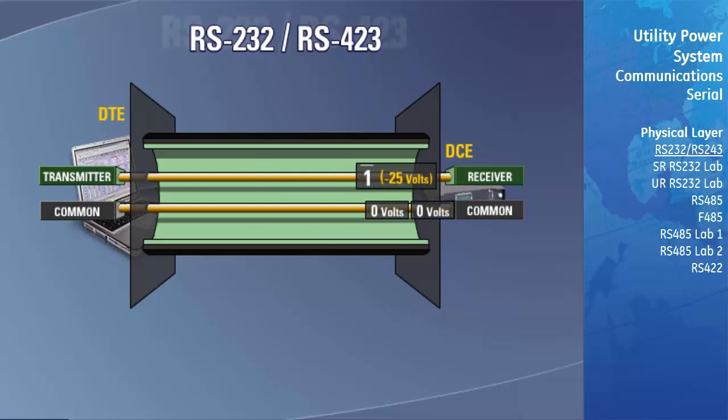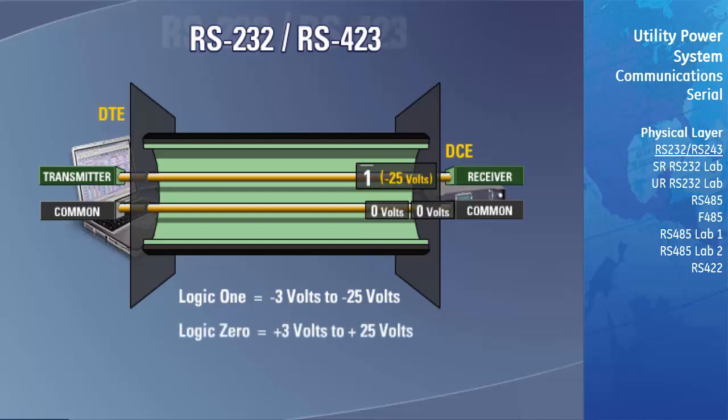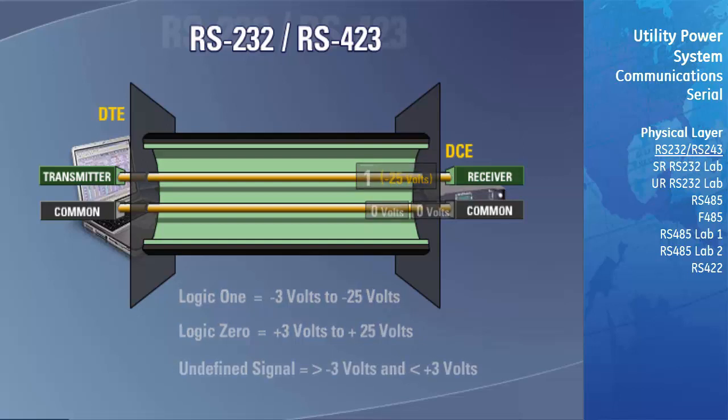For the receiver, a logic 1 is considered to be from minus 3 volts to minus 25 volts, while a logic 0 is between plus 3 and plus 25 volts. An undefined signal is above minus 3 volts and below plus 3 volts.